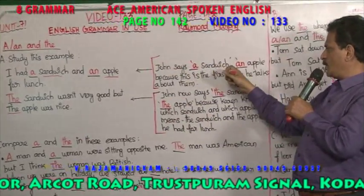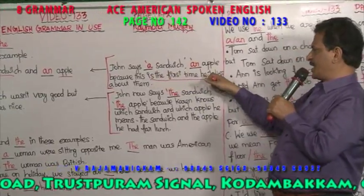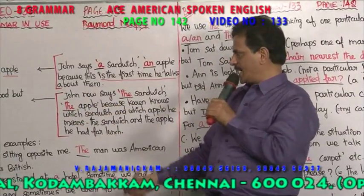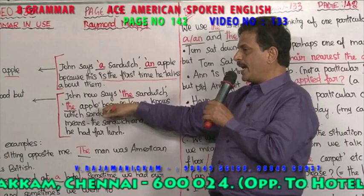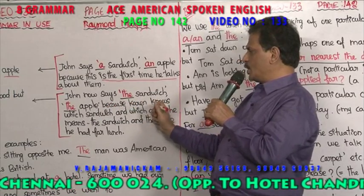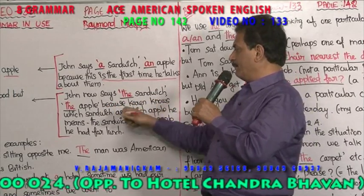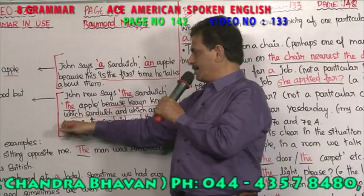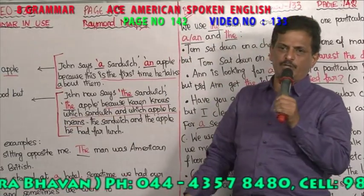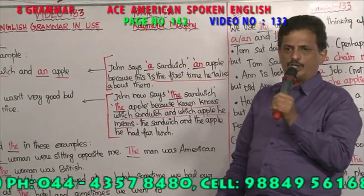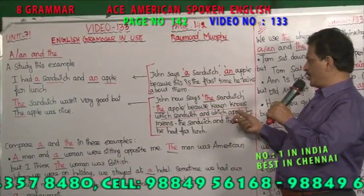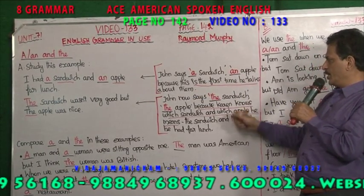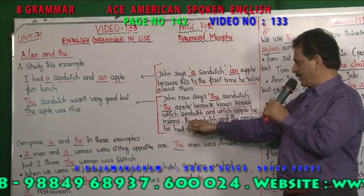John says: 'a sandwich and an apple' because this is the first time he talks about them. Then: 'The sandwich wasn't very good, but the apple was nice.' John now says 'the sandwich' and 'the apple' because Karen knows which sandwich and which apple he means. First time when John mentions about the apple and about the sandwich he is using A and AN. Then Karen knows which apple and which sandwich John is mentioning, so: 'the sandwich and the apple he had for lunch.'